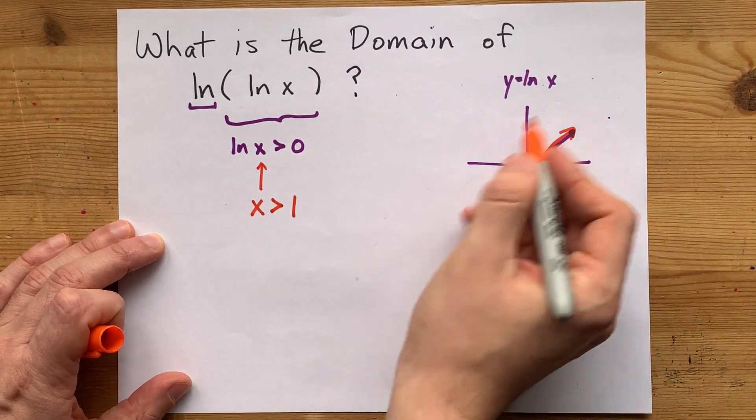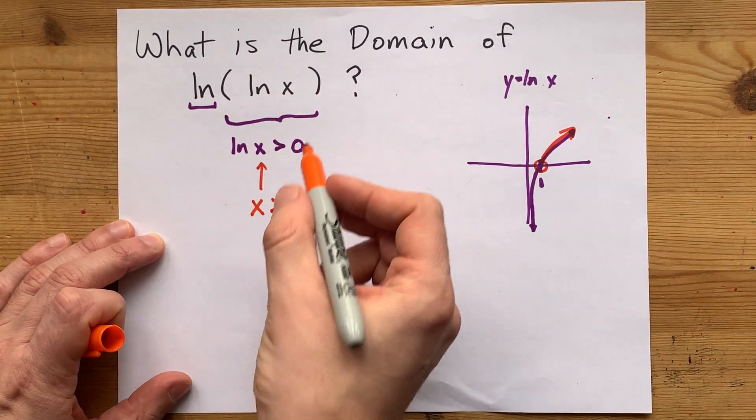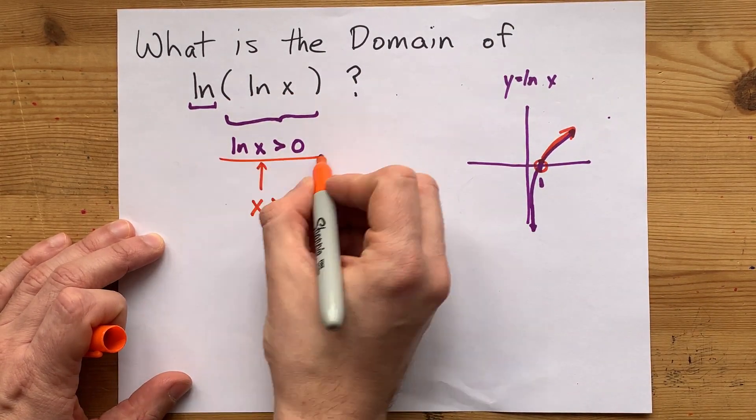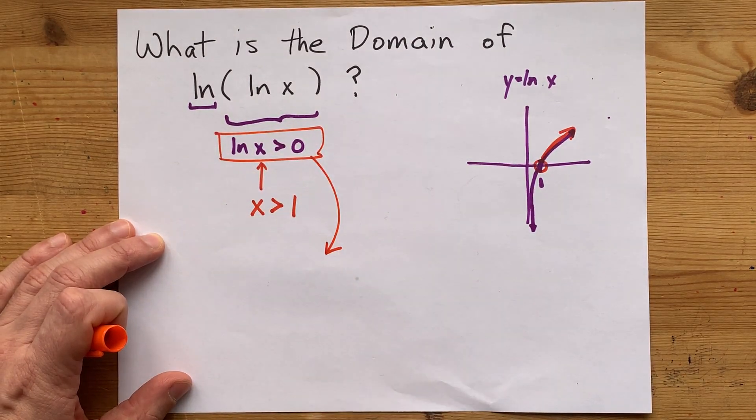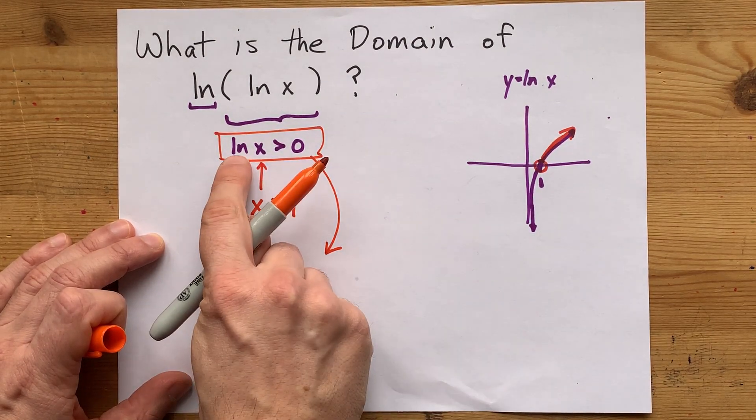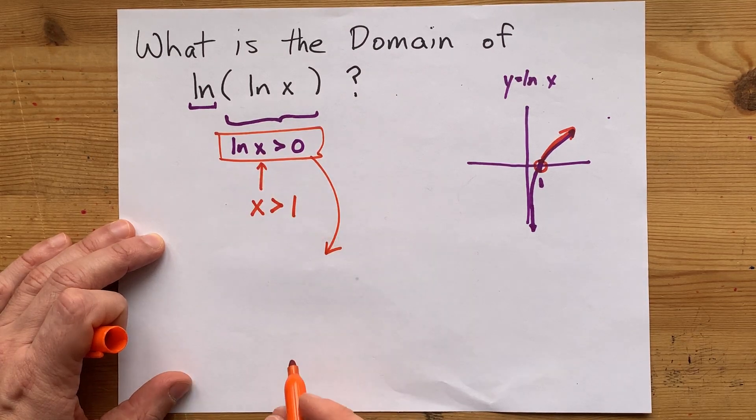Now, if you don't like the graph, you can always do this another way. ln x greater than 0 can be solved by undoing ln on this side of the inequality.